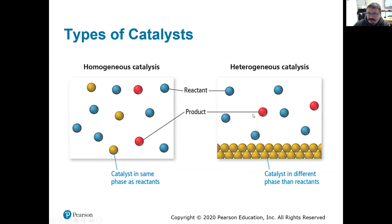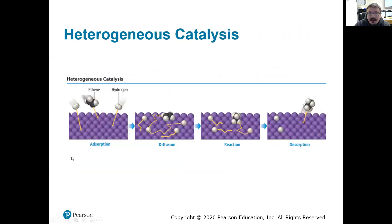Homogeneous catalysts occur in the same phase; heterogeneous catalysts occur in a different phase. Most catalysts in industry are going to be inorganic materials — solid metals like platinum, gold, or nickel. Here's an example of a heterogeneous catalyst and different ways they can work. They can hold a material in a specific orientation so that the other reactant can more easily access it in the correct manner.